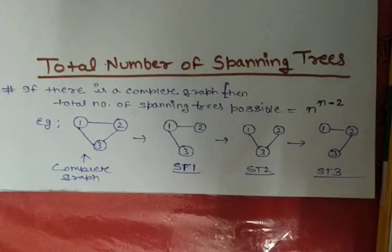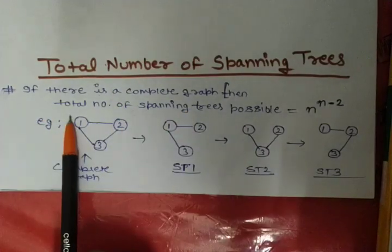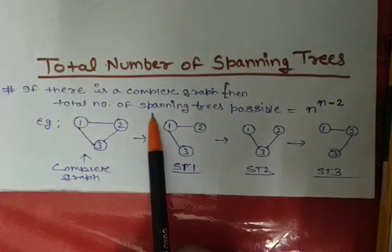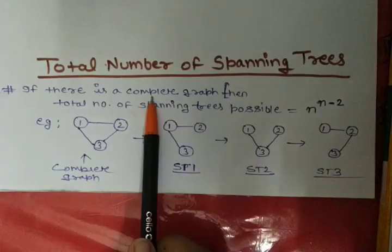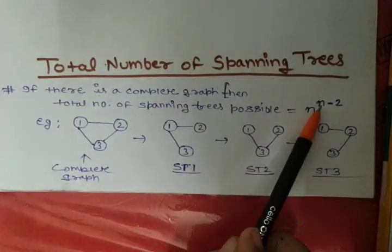Firstly, we will take the example of a connected graph. So suppose if there is a complete graph, then the total number of spanning trees possible for this complete graph is n^(n-2).